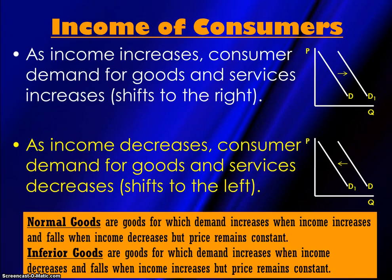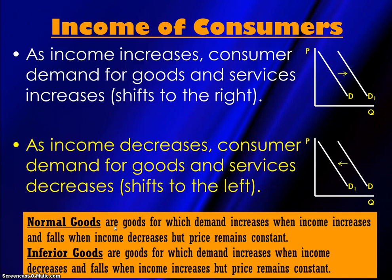The I stands for Income of Consumers. As income increases, consumer demand for a good or service will increase or shift to the right. As income decreases, demand will shift to the left — as long as we're talking about normal goods. Normal goods are goods for which demand increases when income increases and falls when income decreases, while the price of the good remains constant. Basically, when people have more money, a higher quantity is demanded at every given price — they'll buy more stuff. When people have less money, a lower quantity is demanded and they'll buy less stuff.